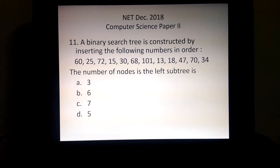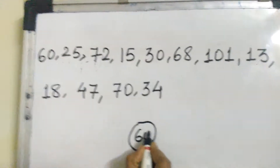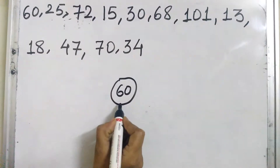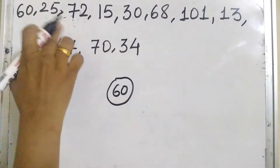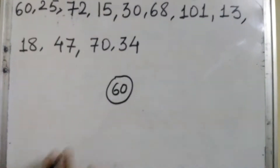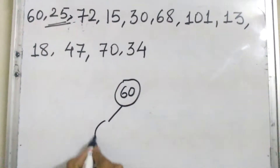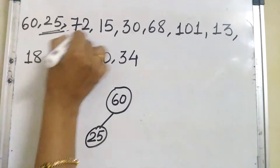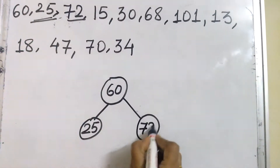We will solve this using a binary search tree. The first value is 60, so it becomes the root. The second value is 25 — if the value is less than the root, it is inserted at the left side; if greater, at the right side. So 25 is less than the root and is inserted at the left. Next value is 72 — it is greater than the root, so it is inserted at the right side.